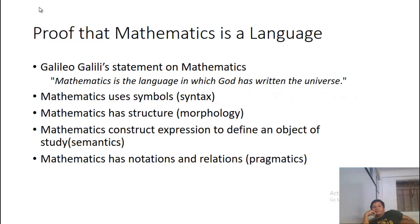Proof that mathematics is a language: Galileo Galilei's statement on mathematics - 'Mathematics is the language in which God has written the universe.' Mathematics uses symbols: syntax. Mathematics has structure: morphology. Mathematics construct expression to define an object of study: semantics. Mathematics has notations and relations: pragmatics.